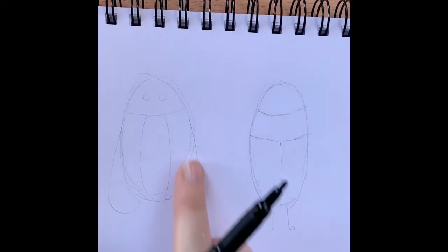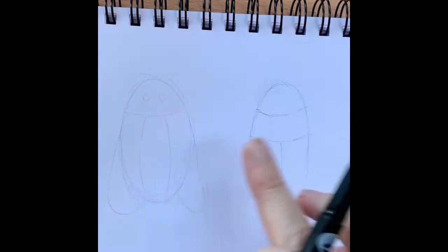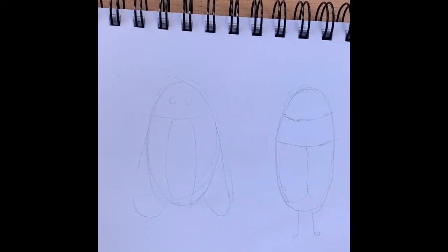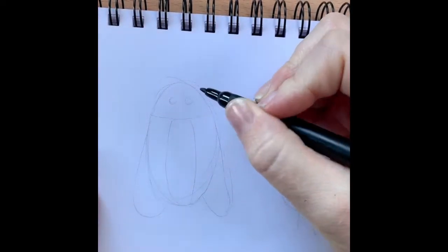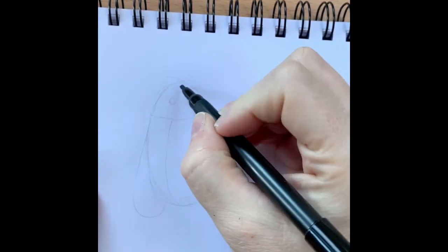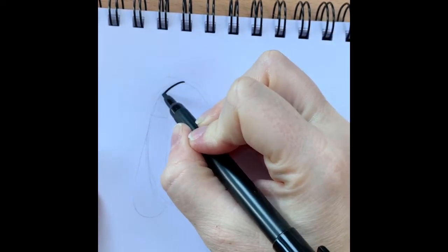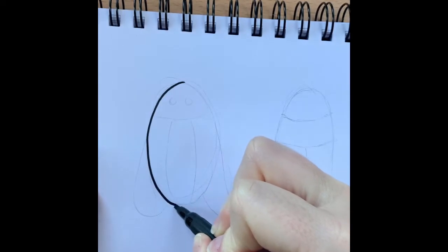We're going to start off doing two oval shapes. So we'll start with this bug over here. Get your pen or your pencil and we're going to draw our oval like this, all the way around.